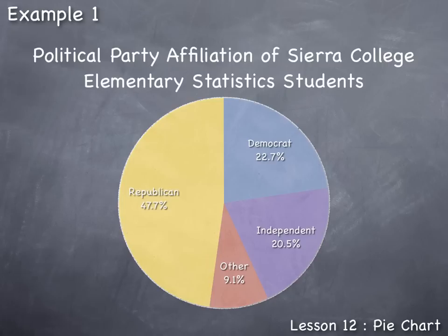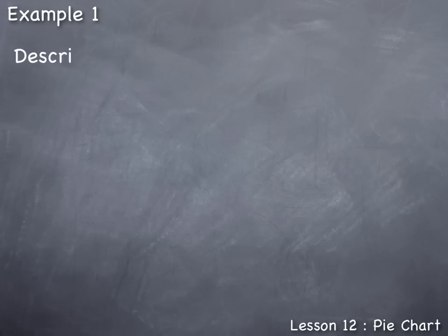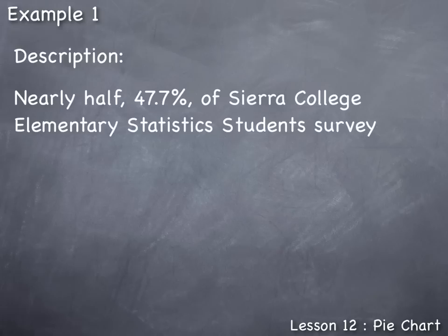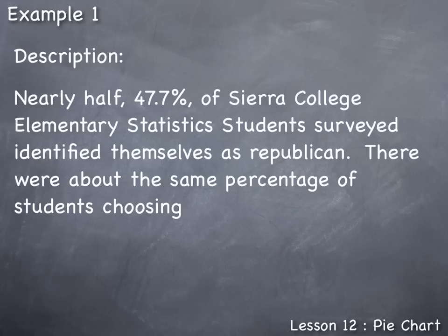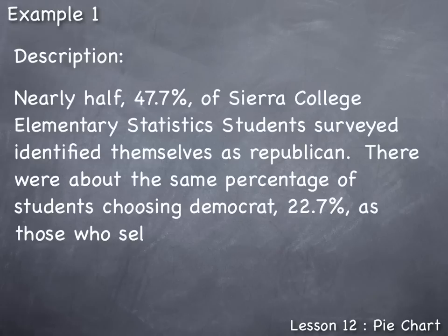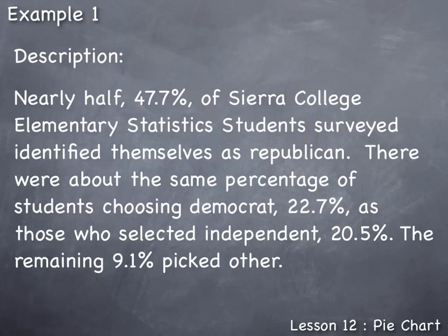Here is one such description: Nearly half, forty-seven point seven percent, of Sierra College elementary statistics students surveyed identified themselves as Republican. There are about the same percentage of students choosing Democrat, twenty-two point seven percent, as those who selected Independent, twenty point five percent. The remaining nine point one percent picked Other.